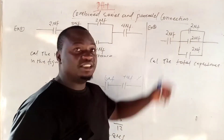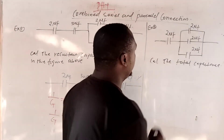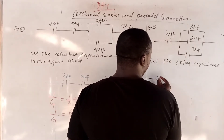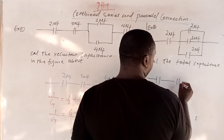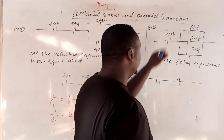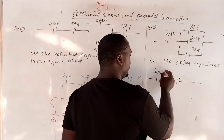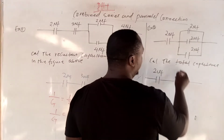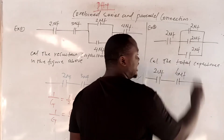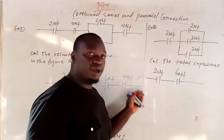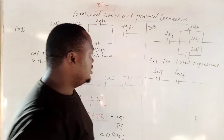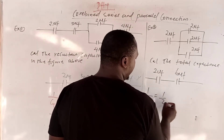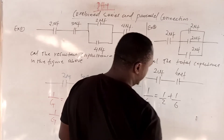Example number 2 — we still have the same circuit and they want you to calculate the total capacitance. By redrawing, you add the parallel ones. This is 2 microfarad each, so 2 plus 2 plus 2 gives you 6 microfarad because they are in parallel — we add them together. Now, since they are in series: 1/CT = 1/2 + 1/6.